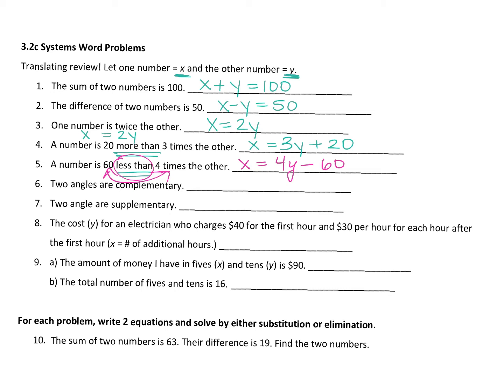How would you write an equation for two angles are complementary? What does complementary mean? To 90, right? So how do you write that as an equation? x plus y equals 90. Yes. Okay, so how do you write two angles are supplementary? Yes, equals 180. Okay.